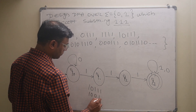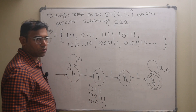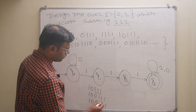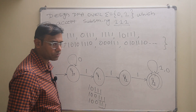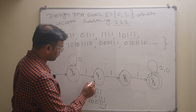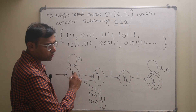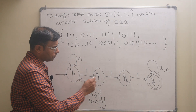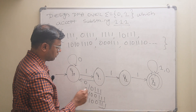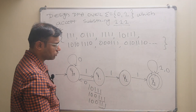Next, for strings like 1011, 10011, 100111 — where a single one is followed by zeros then 111 — the DFA must handle going from q1 back via zero. So I add an arrow from q1 back to q0 on input zero, accepting strings like 1011, 10111, 1010111.